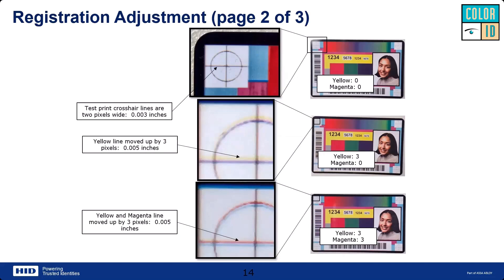Jeff notes that this setting adjusts alignment in the vertical direction — the short direction of the card. If instead the vertical line on your registration card is blurry with colors not lined up, that's probably more of a cleaning issue with your printer. Typically this setting addresses the horizontal color shift, where instead of black you see a yellow line above a blue line.